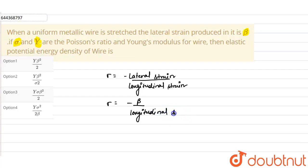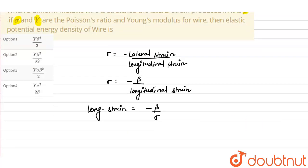From here, the longitudinal strain comes out as minus beta upon sigma. Now the potential energy density is given as half into stress into longitudinal strain.